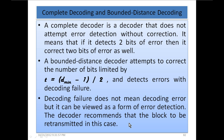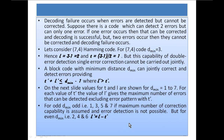Decoding failure does not mean decoding error. It can be viewed as a form of error detection: the decoder recommends that the block be retransmitted. If the code detects 2 errors but its correction capability is limited to 1 bit, it asks the transmitter to retransmit. Decoding failure occurs when errors are detected but cannot be corrected. If 1 error occurs it can be corrected successfully, but if 2 errors occur, a decoding failure results.